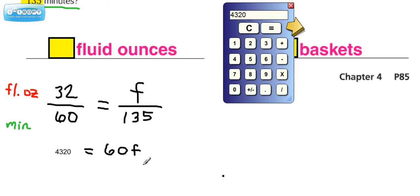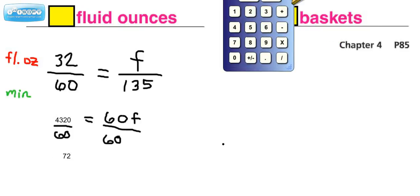Now, if we use what we know about algebra, the opposite of multiplying a variable by 60 is to divide it, and we show that with the division bar. So we have this value already in the calculator, and we're just going to now divide that by 60. And we get 72 as an answer. So F equals 72.